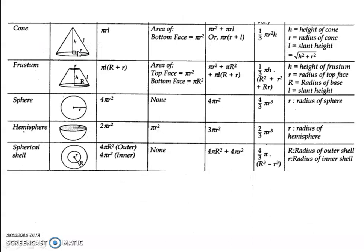Cone: curved surface area is πRL. Here, children, you have slant height, altitude, and radius. You should know the formula to find L: slant height L = √(H² + R²). You need to know this because there are questions to find slant height. Curved surface area is πRL.